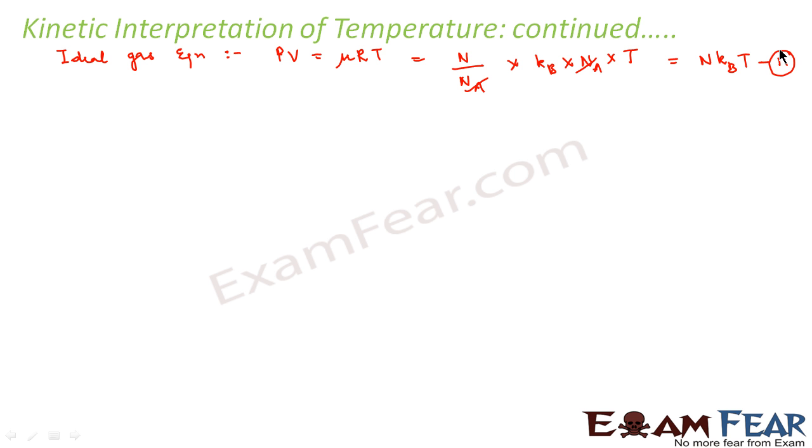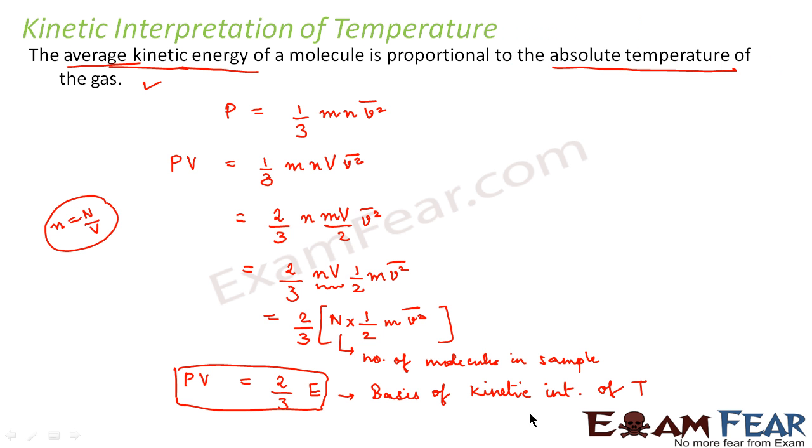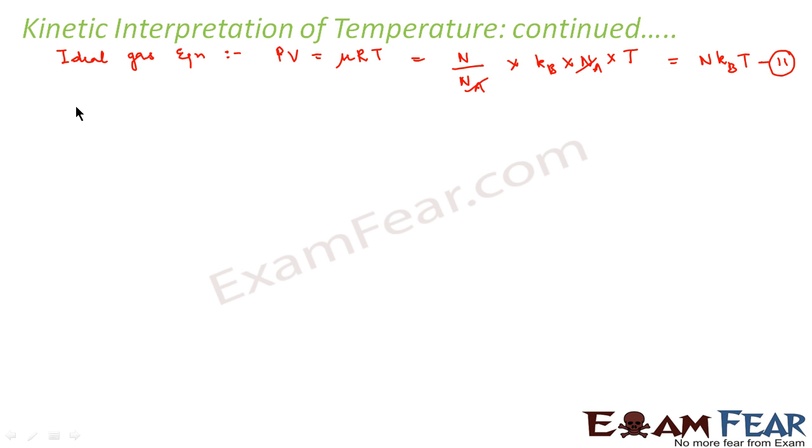Let us name this equation as equation 2 and let us call the previous equation as equation 1. Now if you see that the left hand side of equation 1 and 2 are the same, so we can equate 1 and 2 because they both are basically the same. So we can say that 2/3 E equals N kB T.